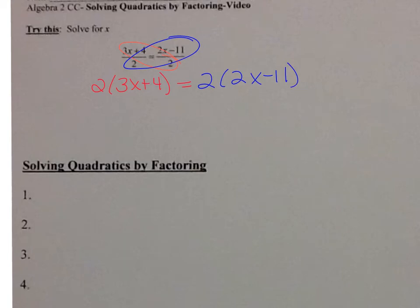So we will distribute. We have 2 times 3x is 6x, 2 times 4 is 8, equals distribute the 2, we get 4x minus 22.